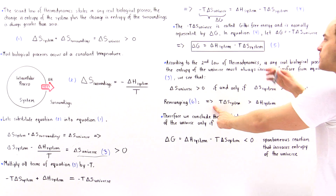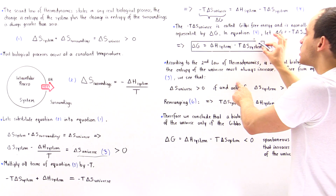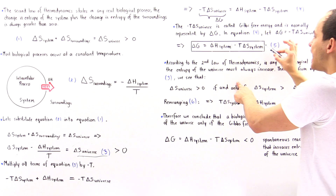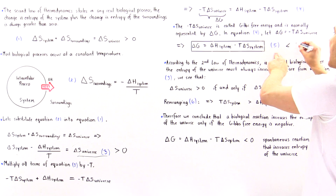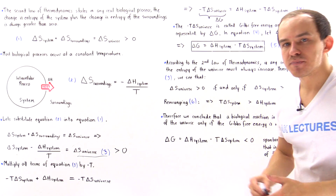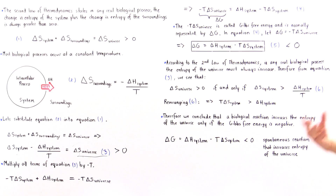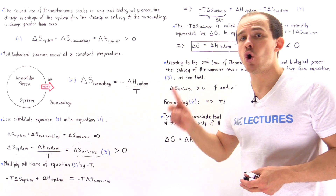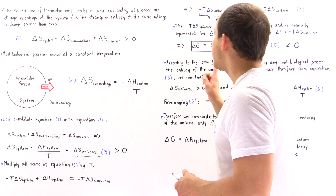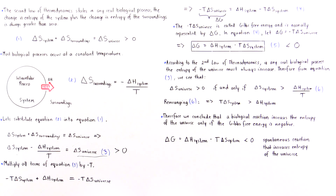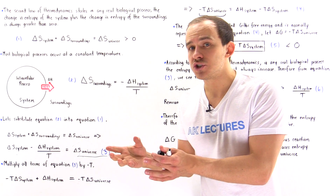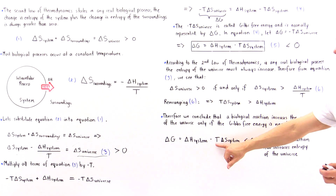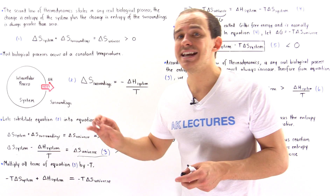According to equation five and this inequality, delta H of the system must be less than T times delta S of the system. When we take their difference, we get a negative value. This means a biological reaction inside our body or cells increases the entropy of the universe only if the Gibbs free energy is a negative value — and when delta G is negative, our reaction at that particular temperature is a spontaneous reaction.